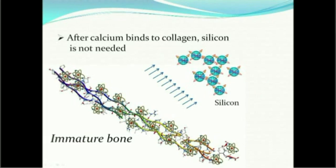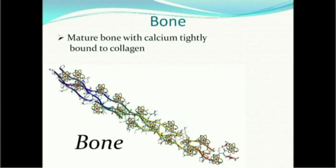After the calcium binds to the collagen, the silicon is not needed. In the mature bone, calcium is bound tightly to collagen and the silicon has disappeared. This may be why silicon has evaded osteoporosis researchers for so long. The ingredients in the Silicale system are designed to support all phases of bone formation and bone maintenance — which is why you need more than just calcium and vitamin D for healthy bone. Thank you.